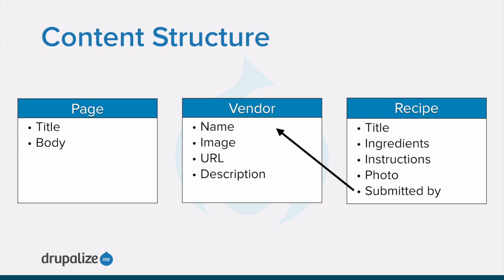The farmer's market site, for example, needs to have a recipes listing page that lists content items of the type recipe, with the ability to filter by ingredients.